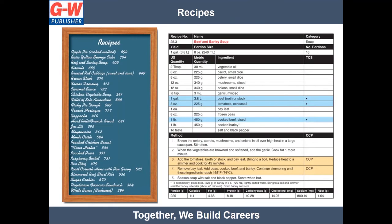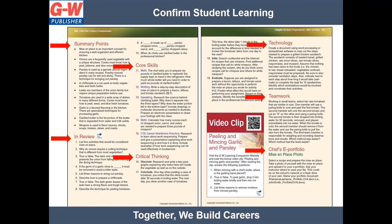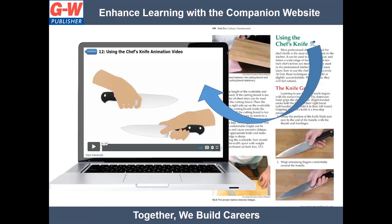Embedded within the pages of the book are recipes with step-by-step instructions so students can apply what they have learned. Extensive chapter review materials reinforce learning and include summary points, in-review, and core skills activities which encourage students to apply writing, reading, speaking, listening, and math to chapter content, while critical thinking challenges students to use higher-level thinking. Additional review material includes technology, which explores technologies related to culinary arts, and teamwork, which includes small group activities that encourage collaboration. Lastly, the chef's e-portfolio activities help students build portfolios for volunteer, education, and training, or career opportunities.